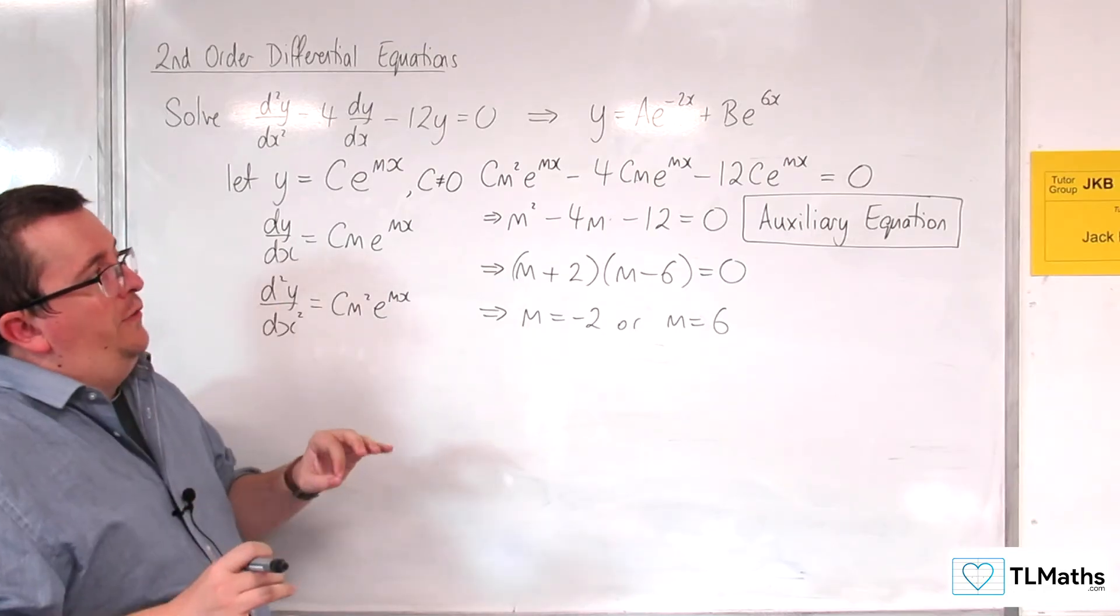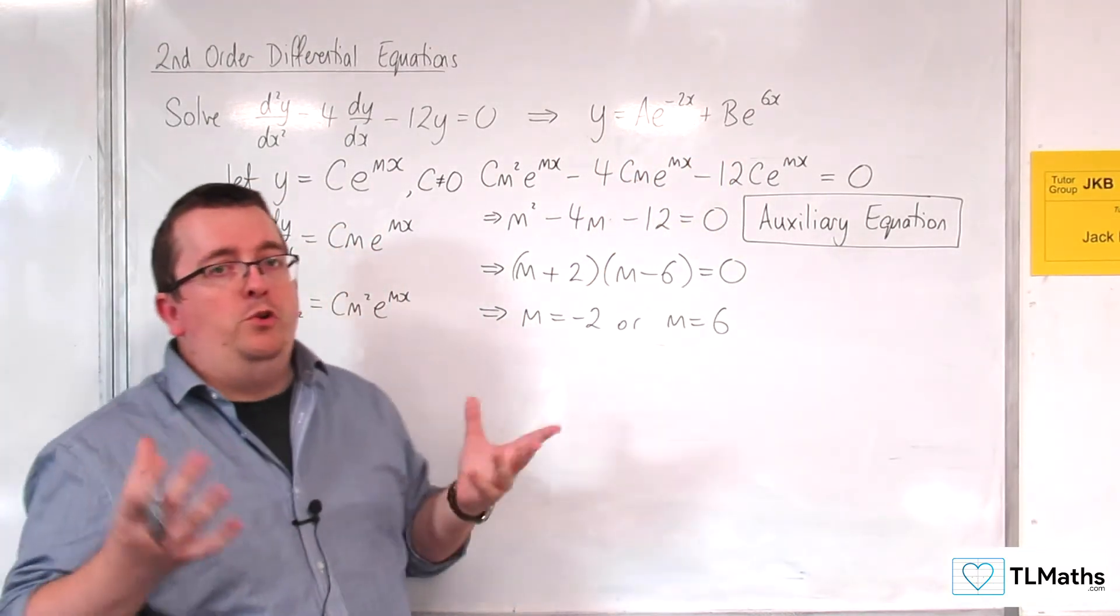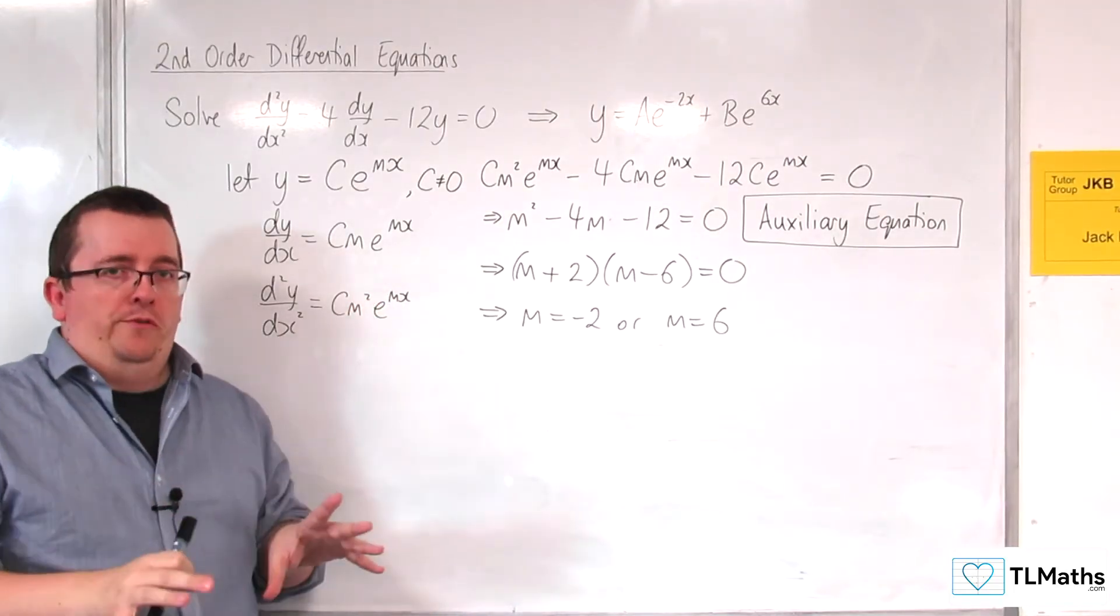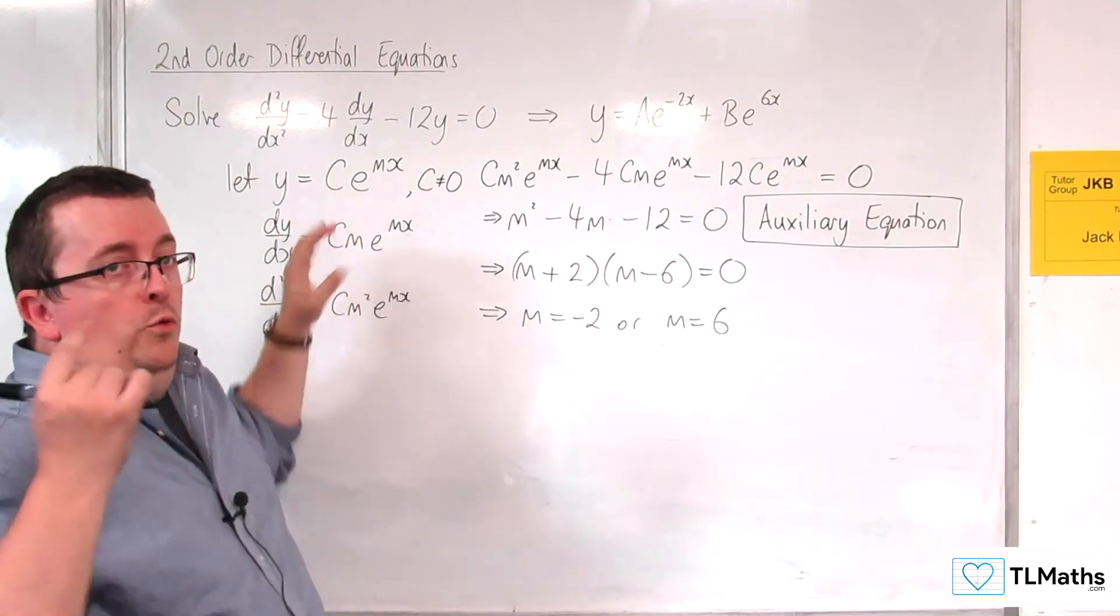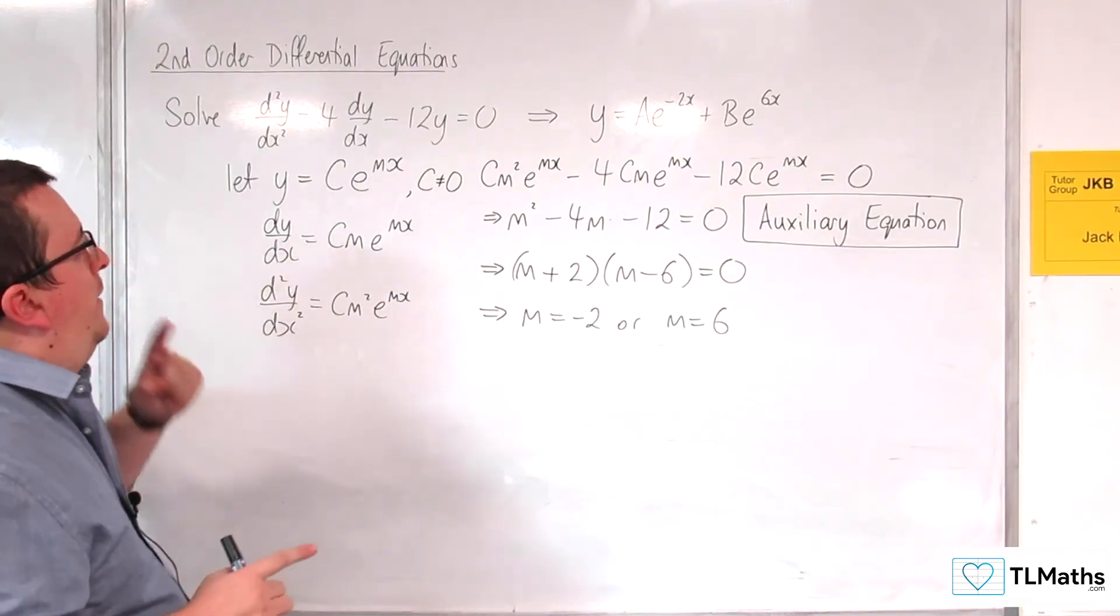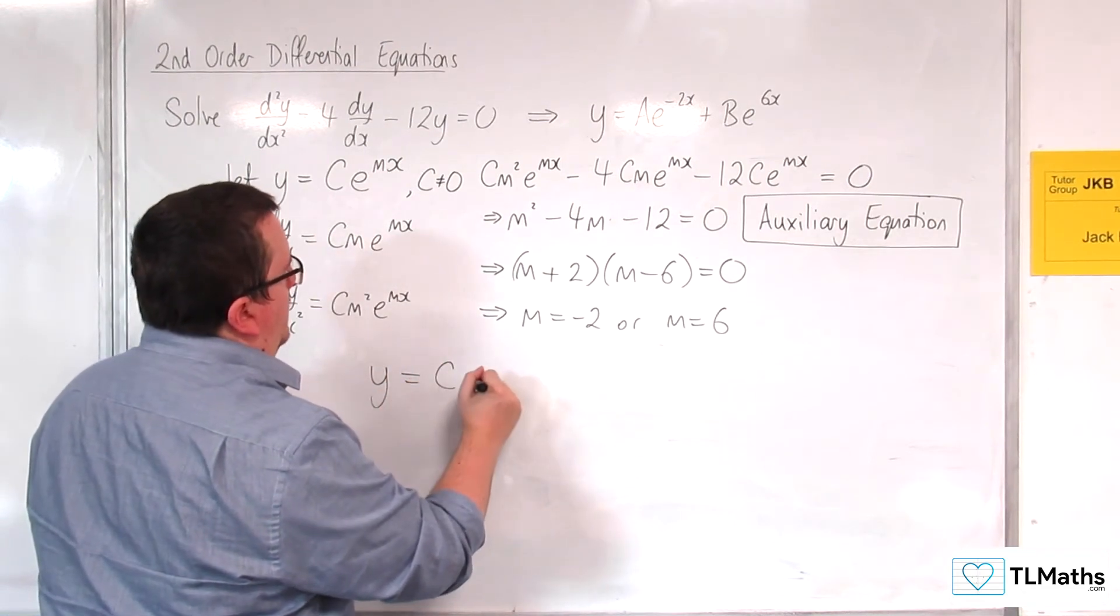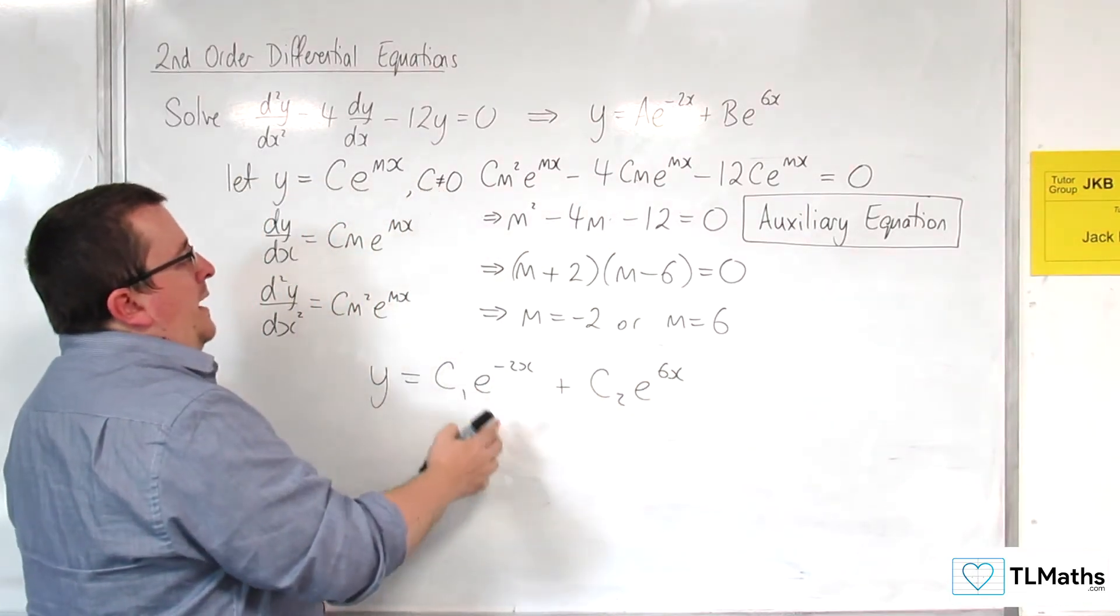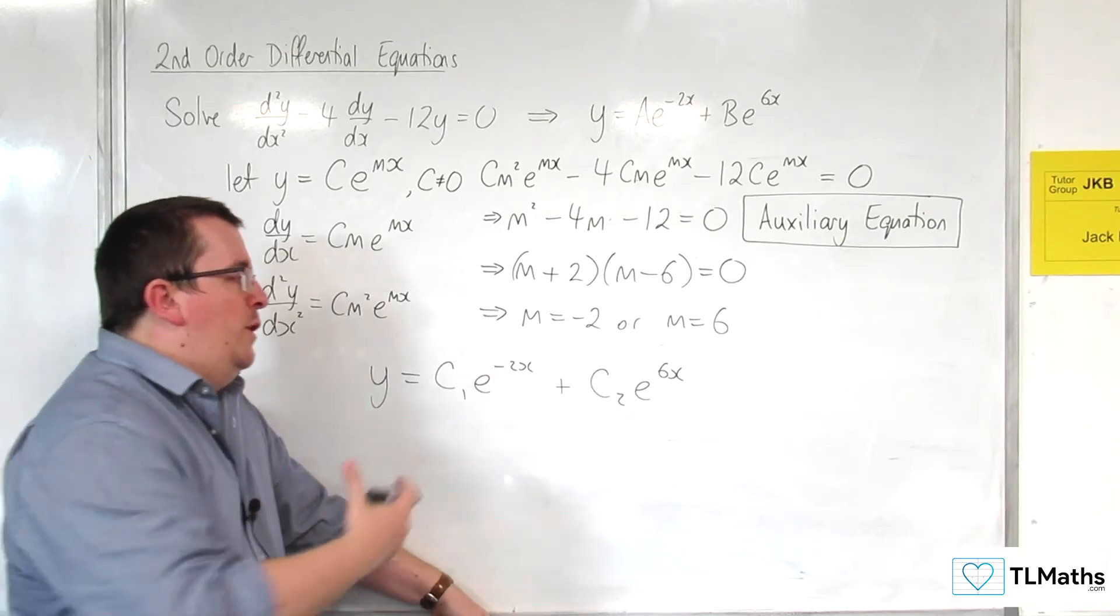Now the problem is that here, I don't just have ce^(mx). I've got two different ones: ae^(-2x) + be^(6x). I've got a linear combination of two of those. Because we've got two solutions here, a linear combination of these would work in the second order differential equation. Now that's not immediately obvious. So what you need to think about is, if I was to substitute in y = c₁e^(-2x) + c₂e^(6x), getting the -2 and 6 from there, I've got two constants, one in front of one, one in front of the other, because it's a linear combination of those two.